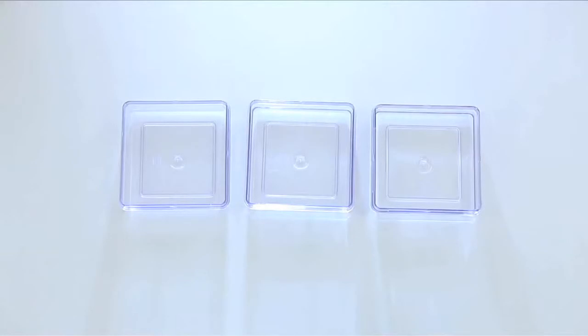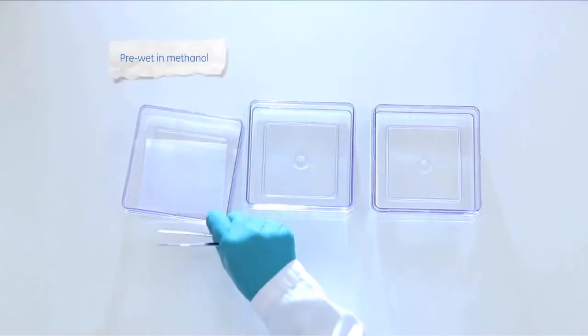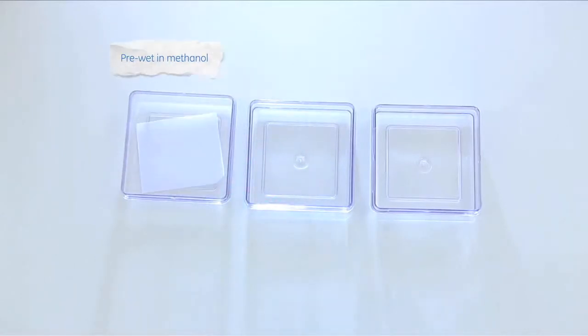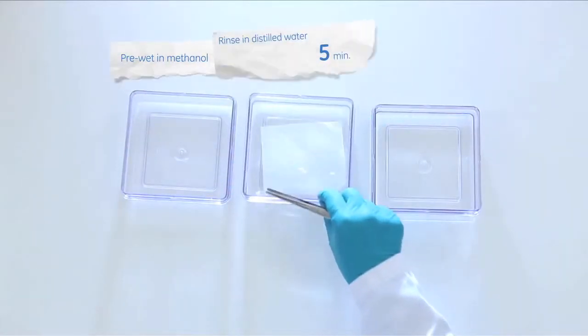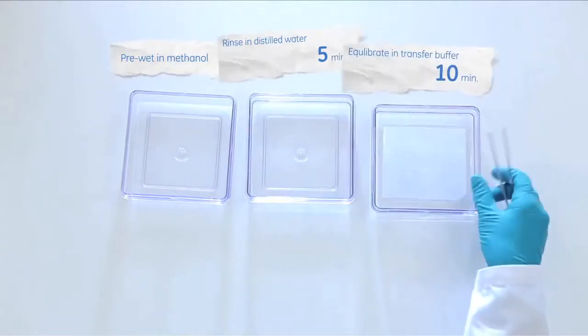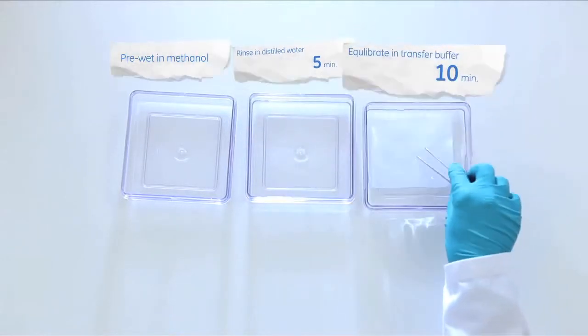As with all PVDF membranes, the GE High Bond P blotting membrane must be pre-wetted in methanol, rinsed in distilled water for 5 minutes, then equilibrate it in transfer buffer for 10 minutes.